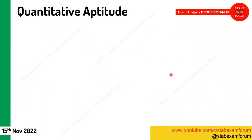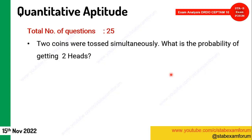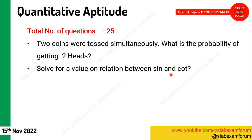Coming to Quantitative Aptitude — trigonometry and probability were the two chapters from which most questions came. First, a probability question: two coins were tossed simultaneously, what is the probability of getting two heads. Also, trigonometry relations between sine, cosine, cosecant, cotangent — everything appeared. For future CEPTAM exams, review all these relations.